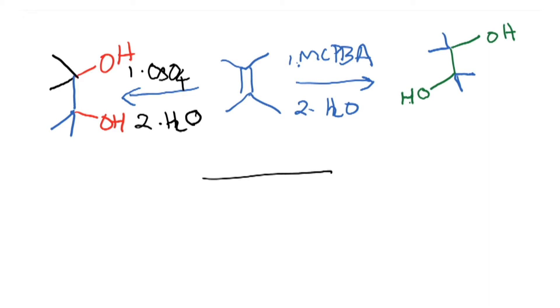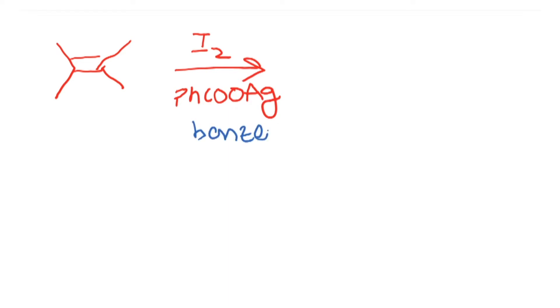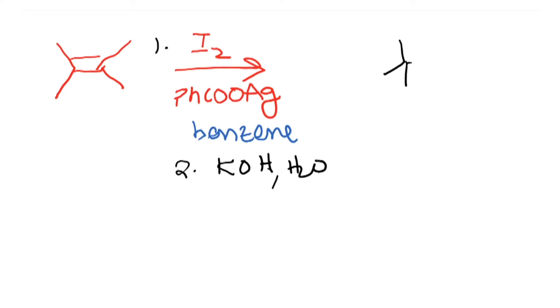So those are two important methods for bishydroxylation. Now we'll look at two additional methods for bishydroxylation — very interesting from a mechanistic standpoint. You start with an olefin and add iodine in the presence of PhCOOAg (silver benzoate), with benzene as solvent. Under these conditions, after a second step adding base and water, you end up getting an anti-diol.